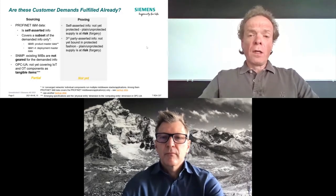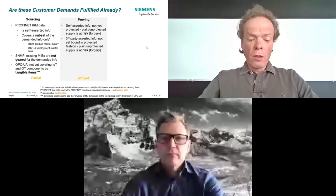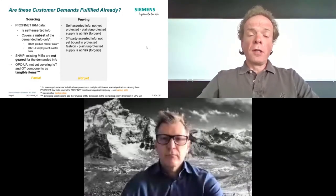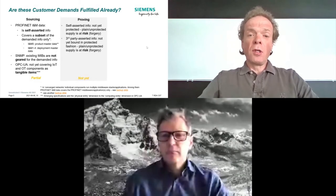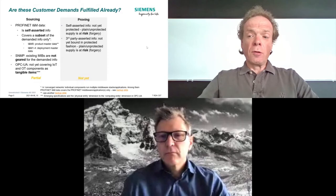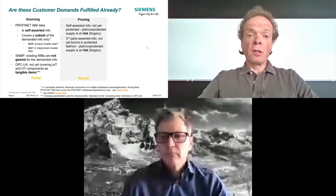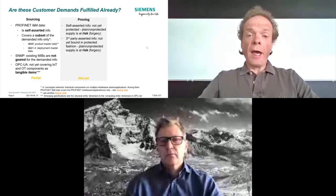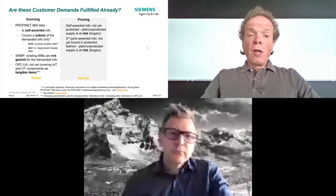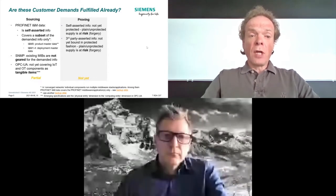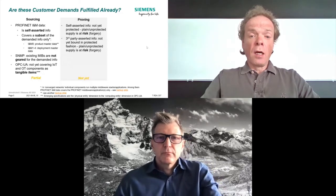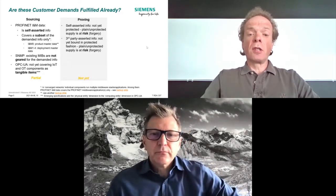Overall, sourcing is only partial. Next, looking at the level of protection or proving of information — are we covered? The answer is not yet. PROFINET I&M data, for instance, is self-asserted information without any protection at all, making it simple to create fake equipment claiming to be Siemens equipment, because there is no safeguard for this I&M data today. That belongs to the class of self-asserted, unprotected information. Third-party data is also typically unprotected. So the proving part is not yet fulfilled.